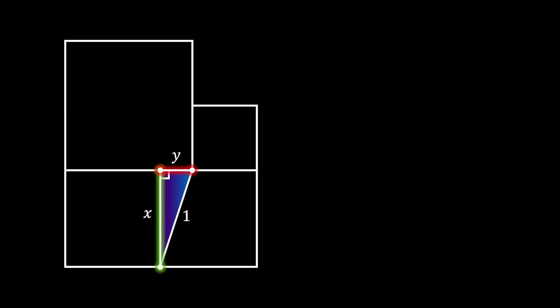From here, we will use the Pythagorean theorem. We can say that the leg x squared plus leg y squared is equal to hypotenuse 1 squared. And we will get that x squared plus y squared is equal to 1. We will save this equation for later.